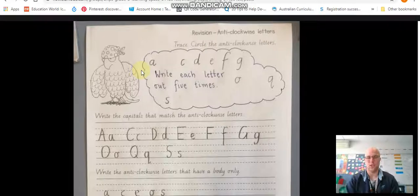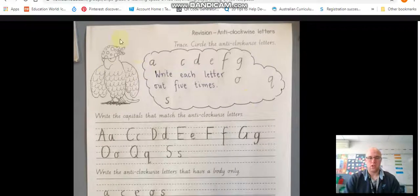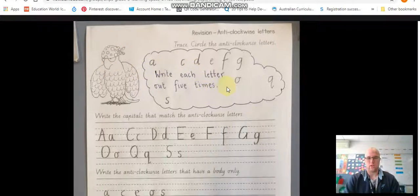Okay so the first thing you're going to do if you're doing this in your book you're going to write out the anti-clockwise letters five times. So we've got a c d e f g o q s. So you're going to write each one out five times.